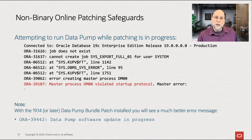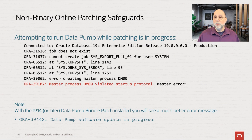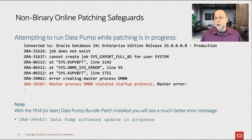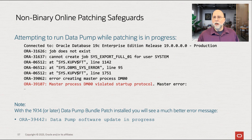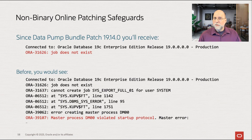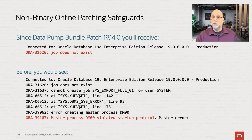On the flip side, if you're installing the patch and a user tries to start a Datapump job, they'll get an error saying the job can't start right now. Before 19.14 that error wasn't easy to understand, but since then — more than a year ago — we have a very informative message: 'Datapump software update is in progress, try again later.' Not only that, but Datapump patching with the new DP load infrastructure runs about 90% faster than it used to, so the install window is on the order of 30 to 90 seconds.